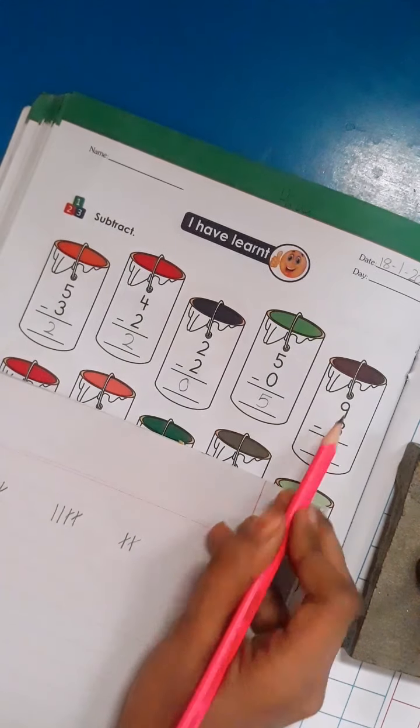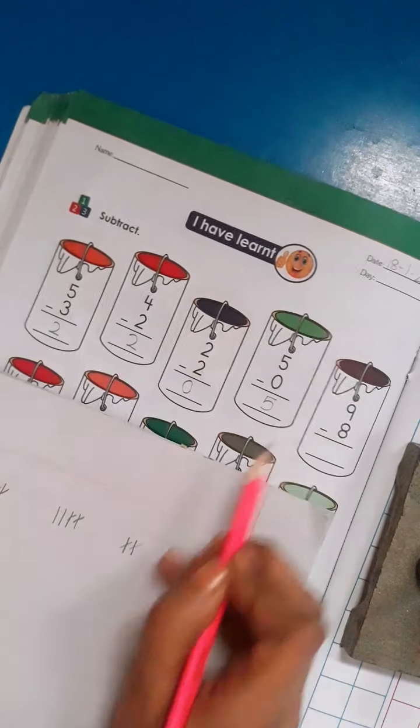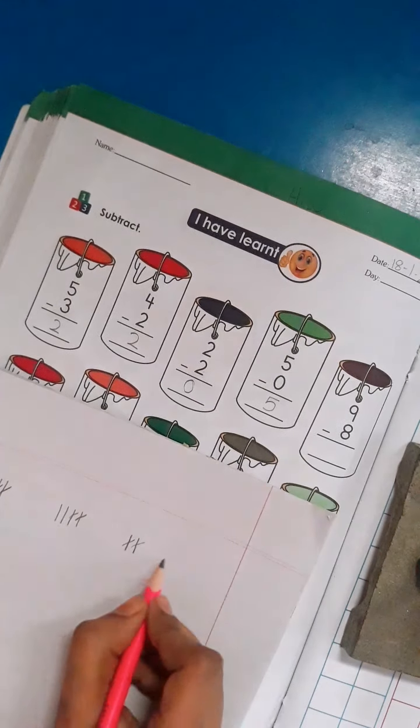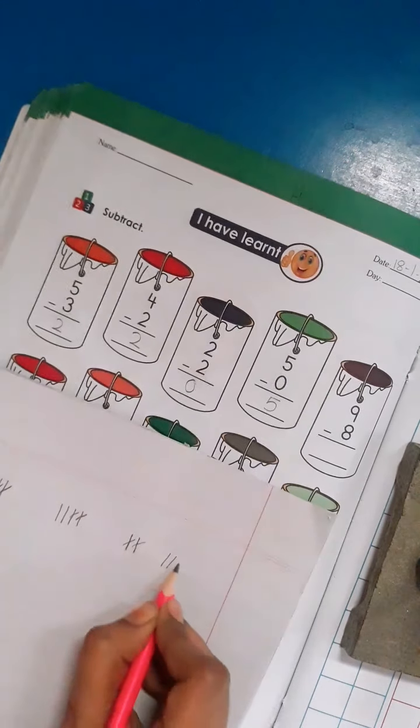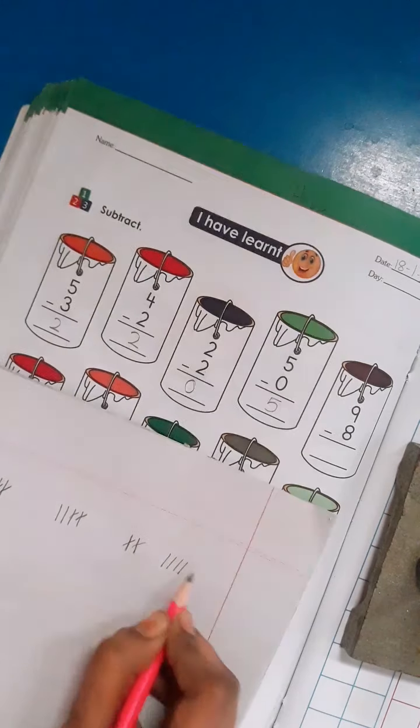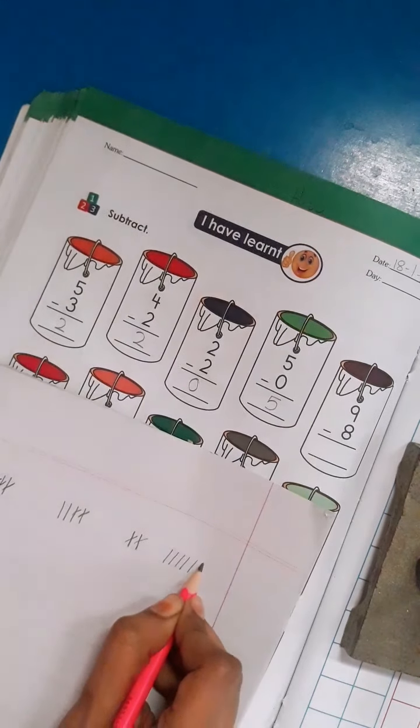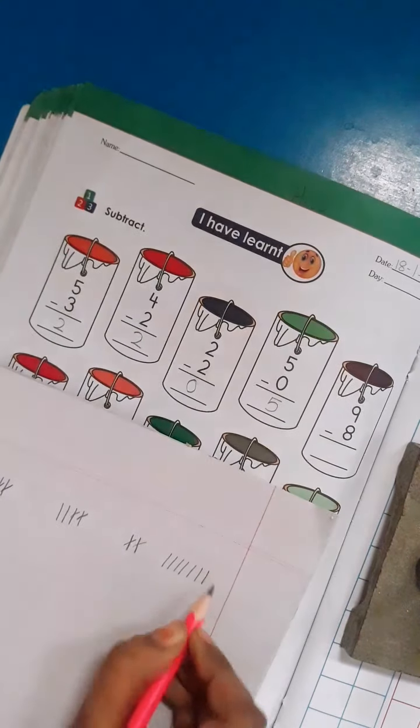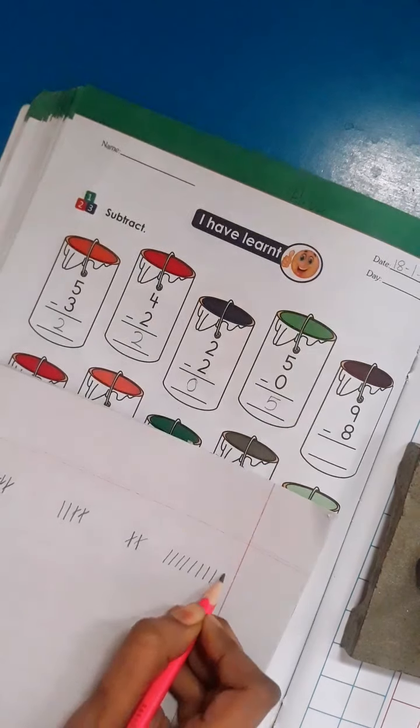9 minus 8. Again, I will draw 9 lines here. 1, 2, 3, 4, 5, 6, 7, 8, 9.